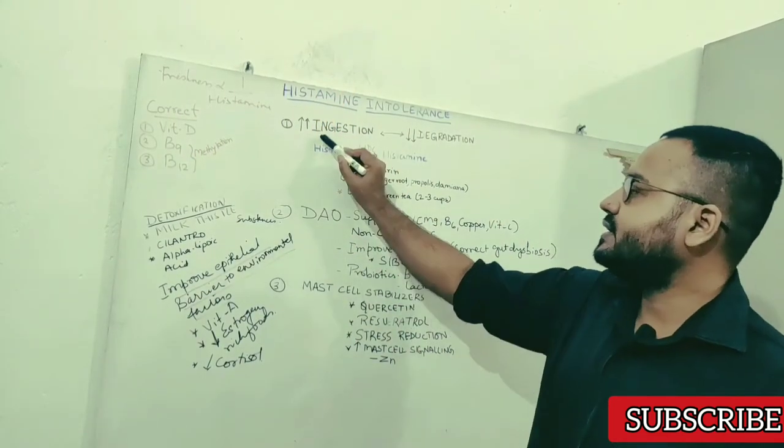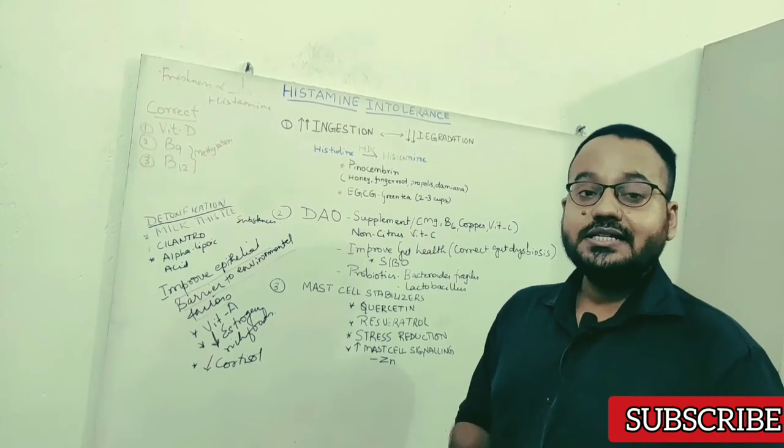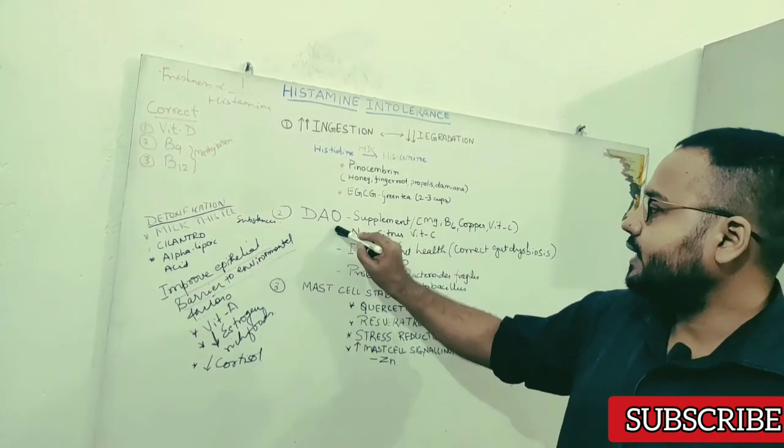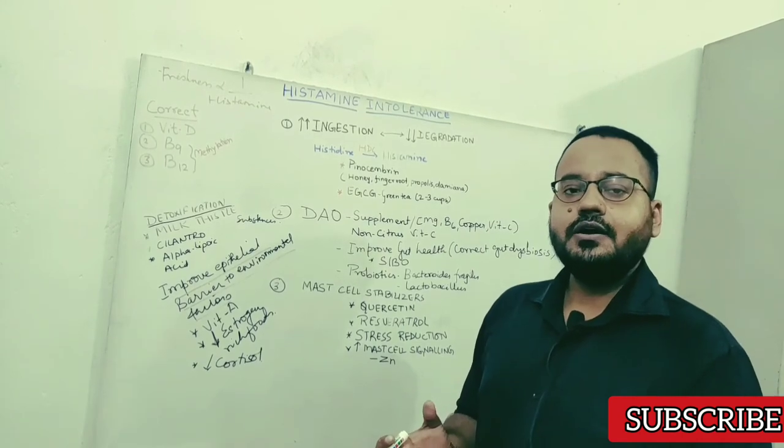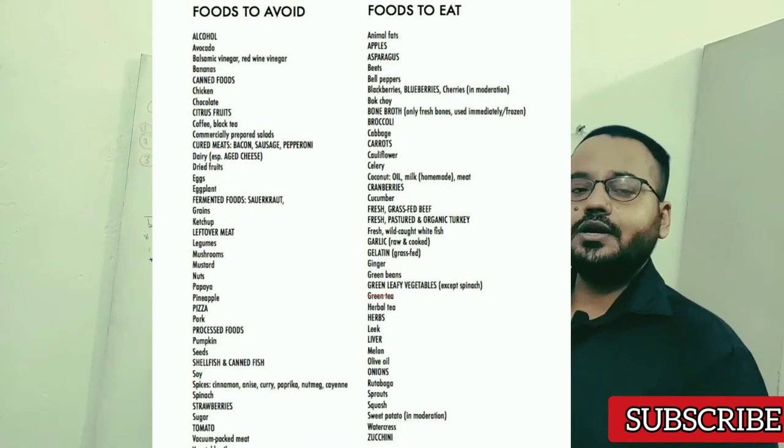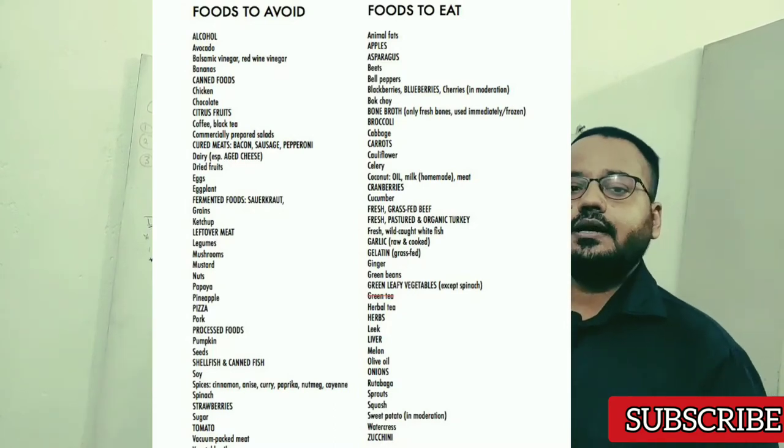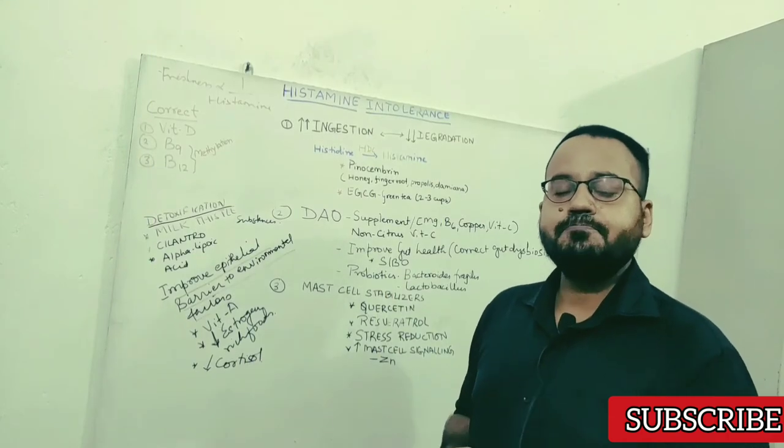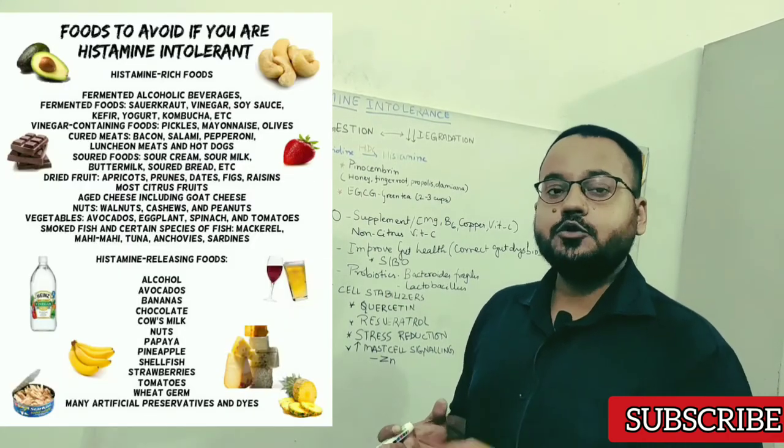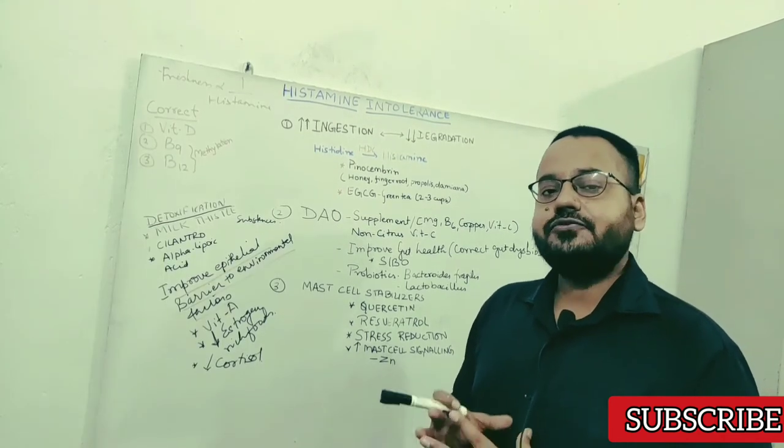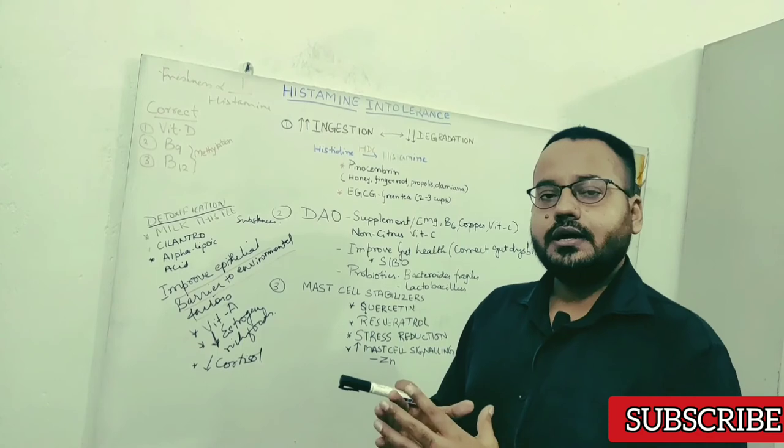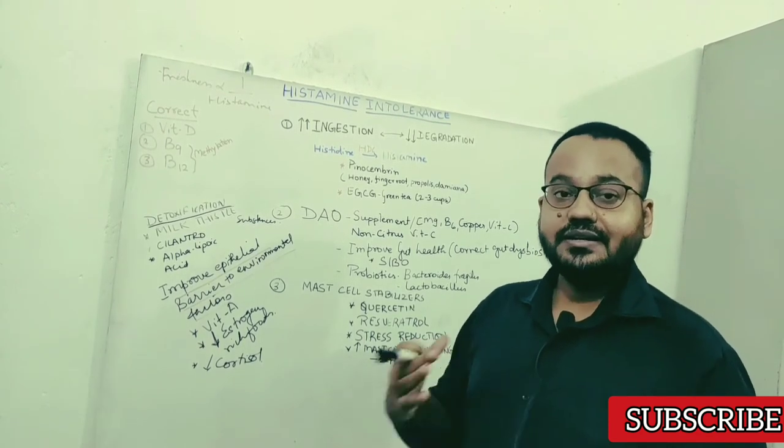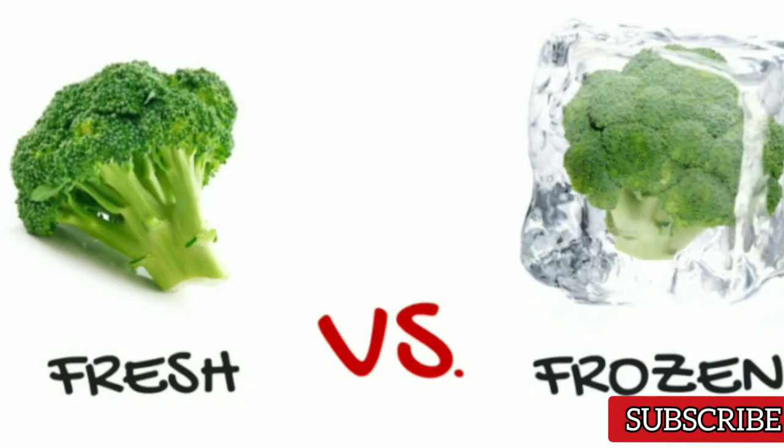Then comes the next important part, decreasing the ingestion of high histamine foods for at least three to four weeks while you are improving DAO and stabilizing mast cells. The basic rule is to eat as fresh as possible. So do not eat leftovers, fermented foods also you want to avoid although they are very healthy, you want to avoid it temporarily while you are fixing these. Fermented foods, then aged cheese, certain dairy products, aged meat, then you want to avoid nightshades like tomatoes, eggplants and the basic rule is to eat as fresh as possible with minimal refrigeration of food. And you will appreciate that after the invention of refrigeration a lot of digestive issues like inflammatory bowel disease have increased in number because fresh is something else, frozen food is something else. So try to eat food which is as fresh as possible.